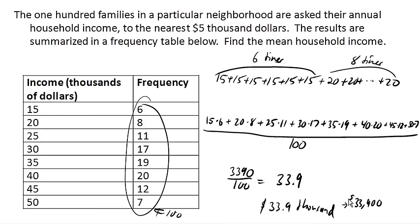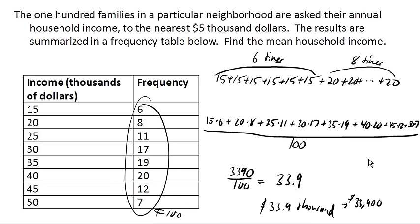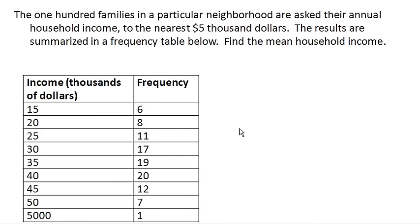Now let's look at a scenario where we get one more family. We're adding one more family to our frequency table — one more family just moved into the neighborhood, and this happens to be a really wealthy family that makes $5 million dollars a year. $5 million would be 5,000 thousands. So before we had 3,390 over 100; now we're going to have that original 3,390 plus an extra 5,000 times 1, out of 101 families.